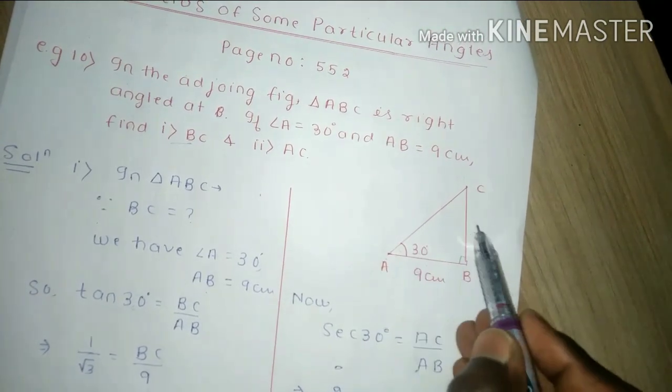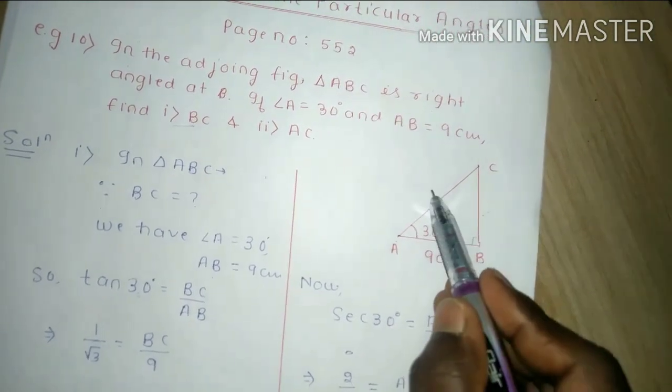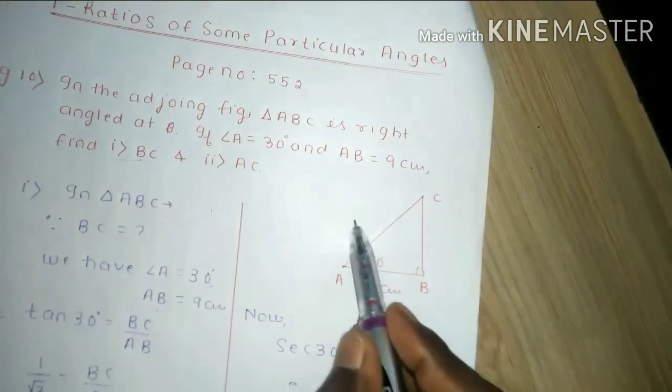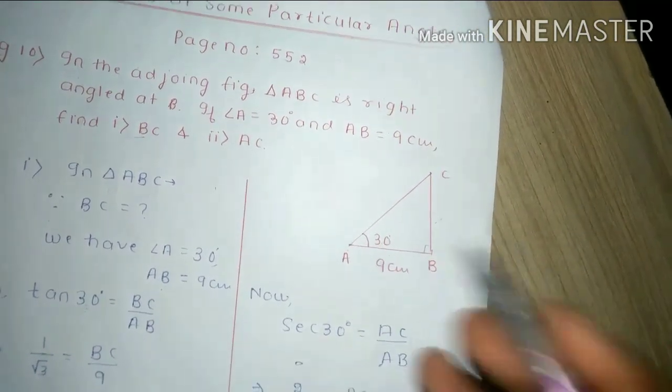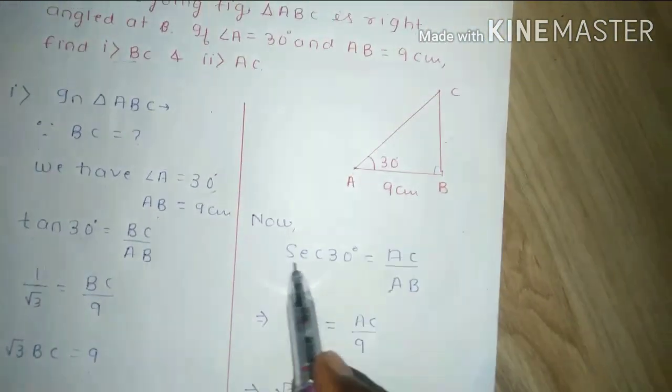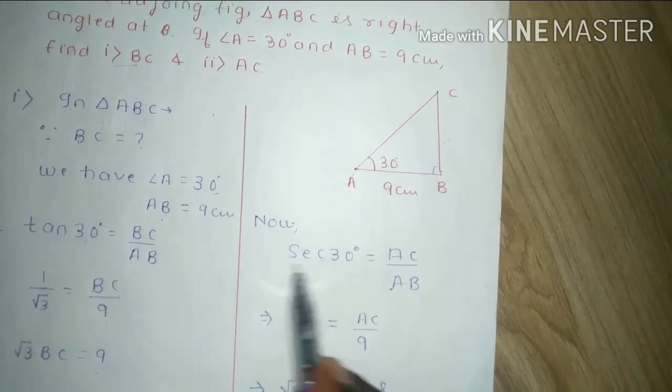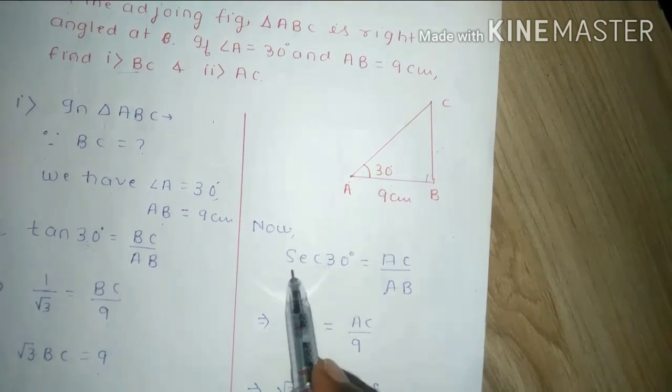Perpendicular and hypotenuse, the relation is given by sin theta. I can use that also, but I am not doing that because if this answer is wrong then the second part answer will also be wrong. So we are using sec instead.